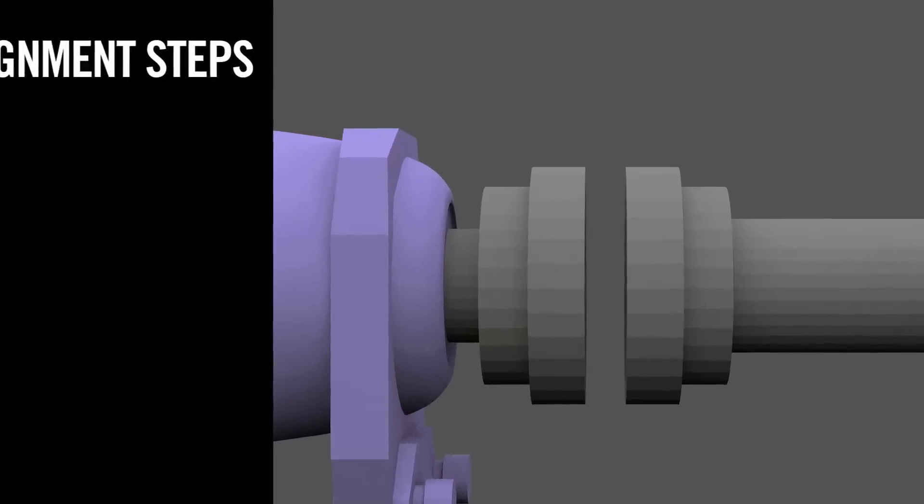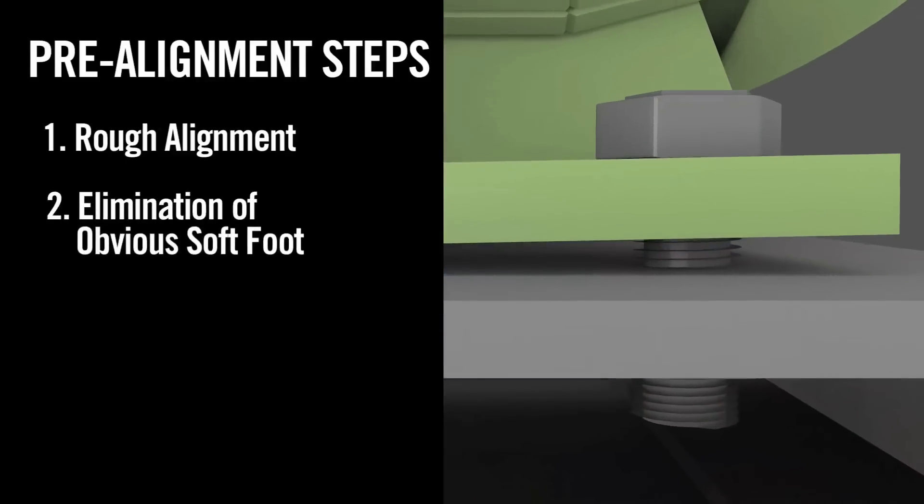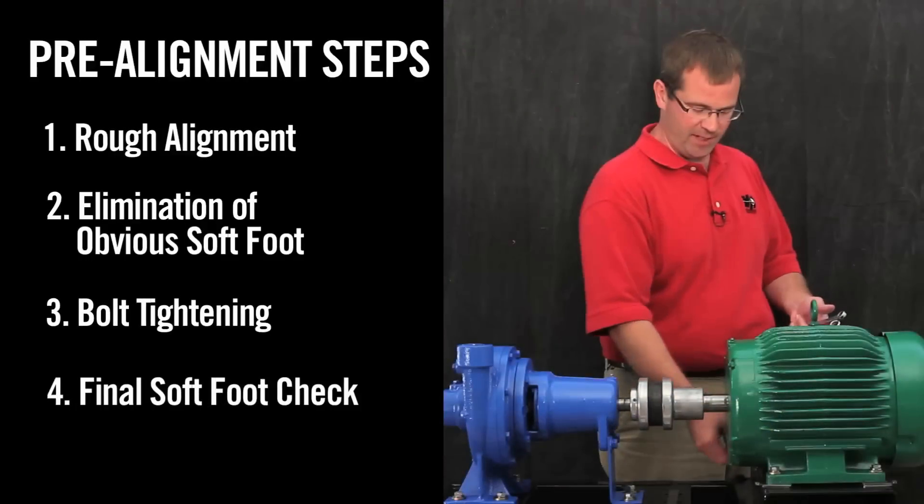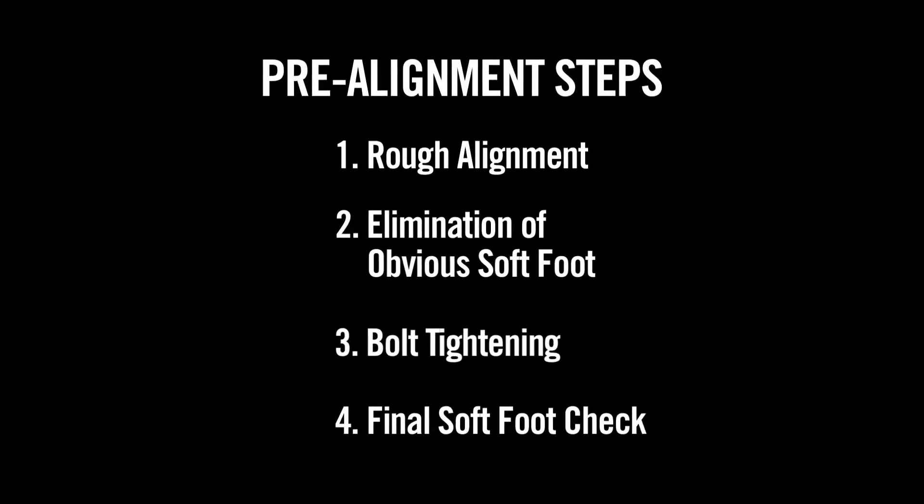The pre-alignment steps we'll cover are rough alignment, elimination of obvious soft foot, bolt tightening, and final soft foot check. By completing these steps you'll prevent unintended movement.